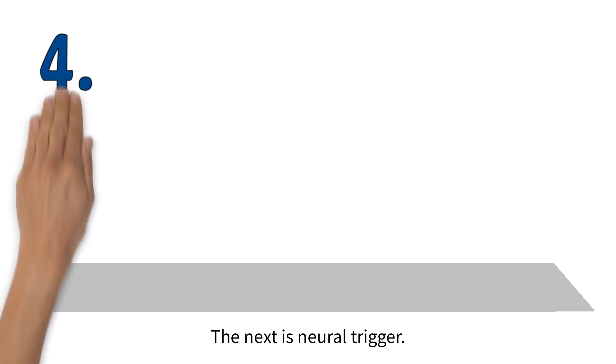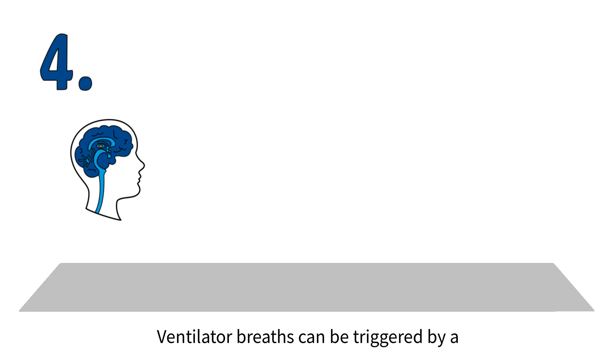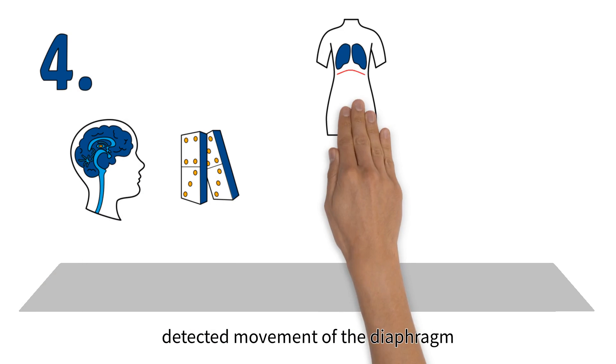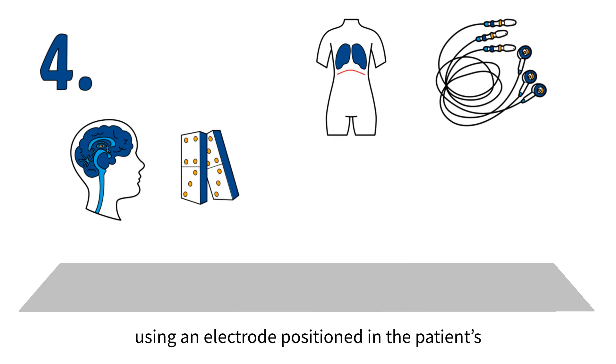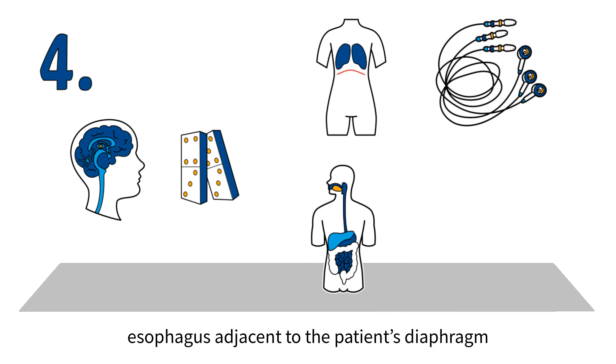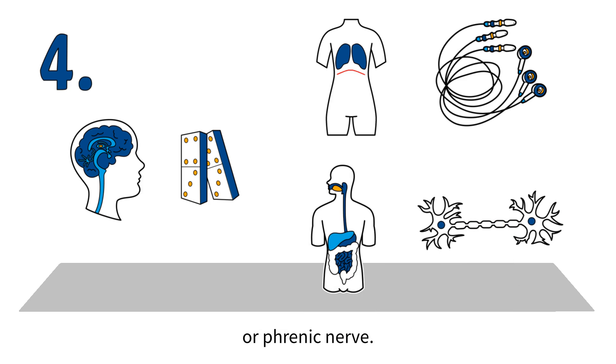The next is neural trigger. Ventilator breaths can be triggered by a detected movement of the diaphragm using an electrode positioned in the patient's esophagus adjacent to the patient's diaphragm or phrenic nerve.